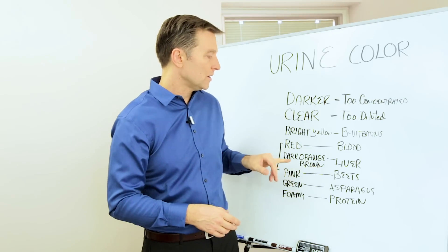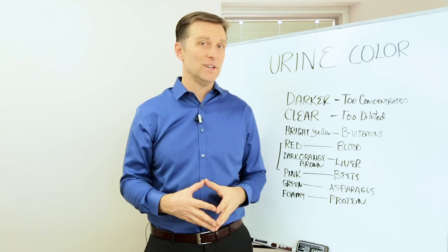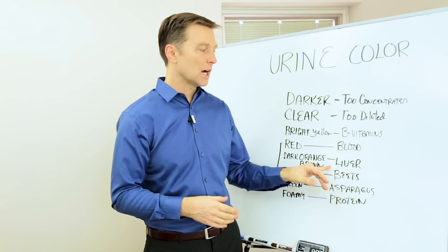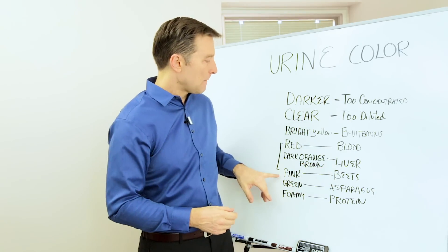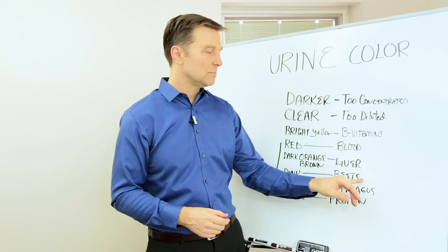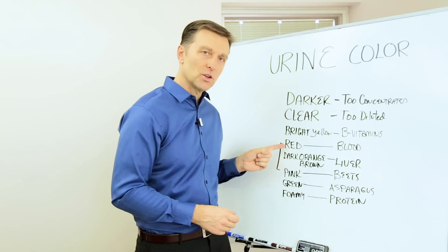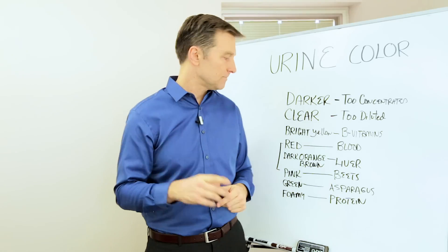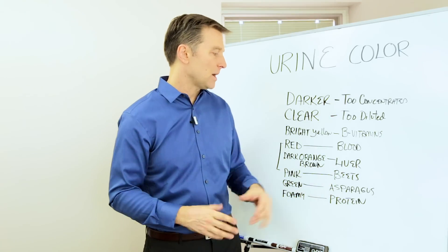So then we have darker orange or brown. That's more of a liver issue. So you need to start going up with your vegetables at that point and cut out the junk, get the junk out of the trunk, right? Pink could be you're eating beets or it could be a little blood. You have a little kidney stone, in which case take potassium citrate. And then green could be asparagus.